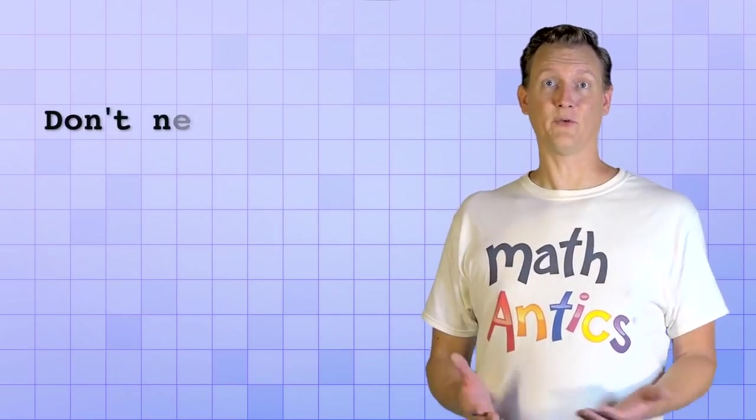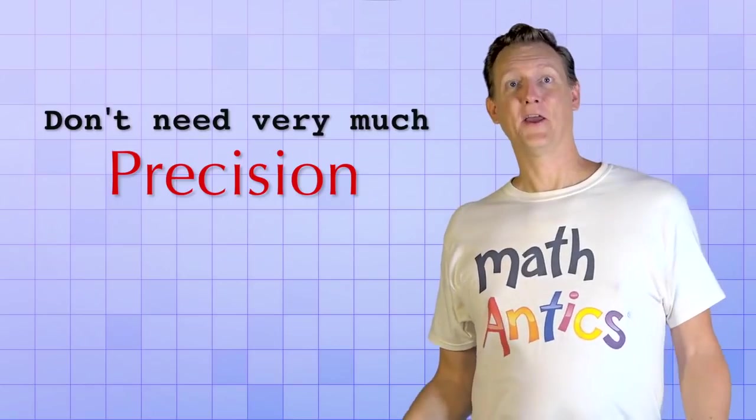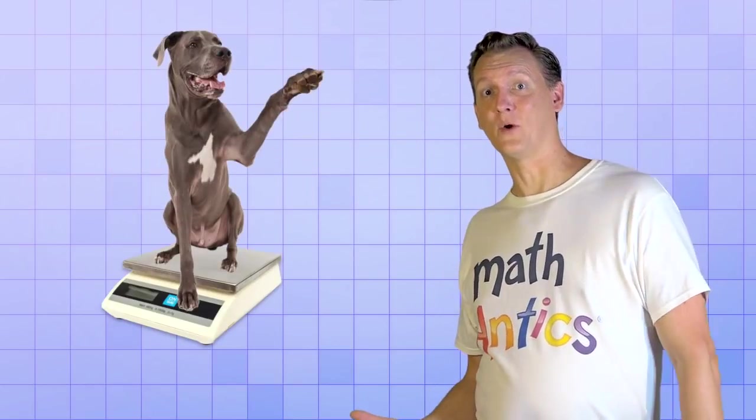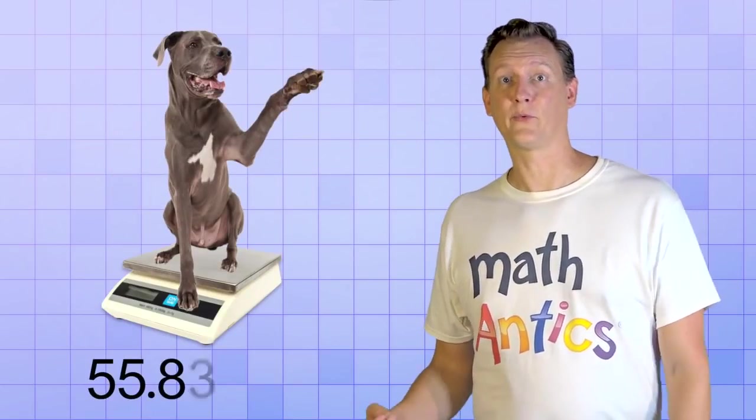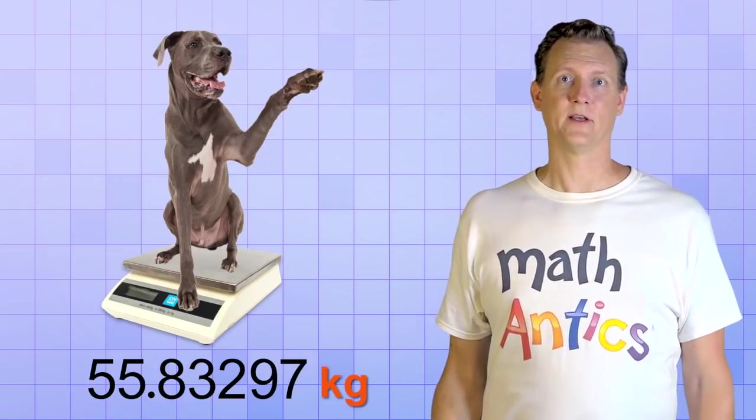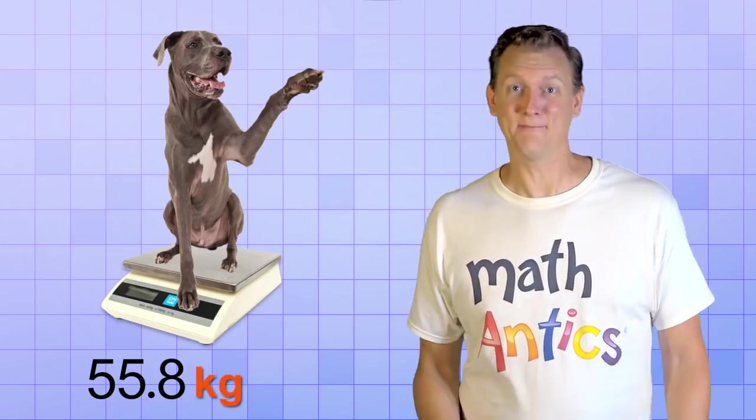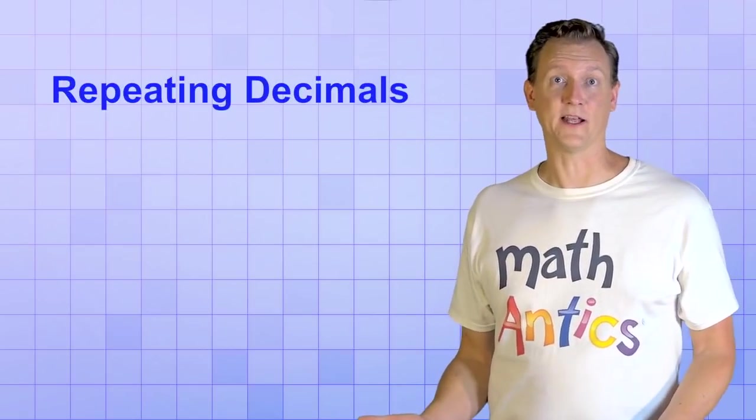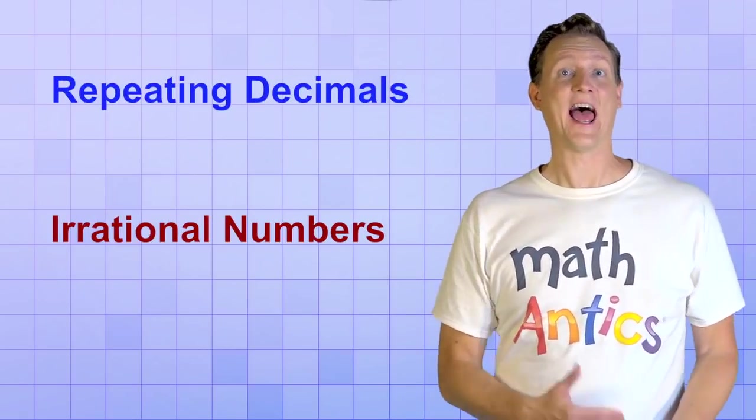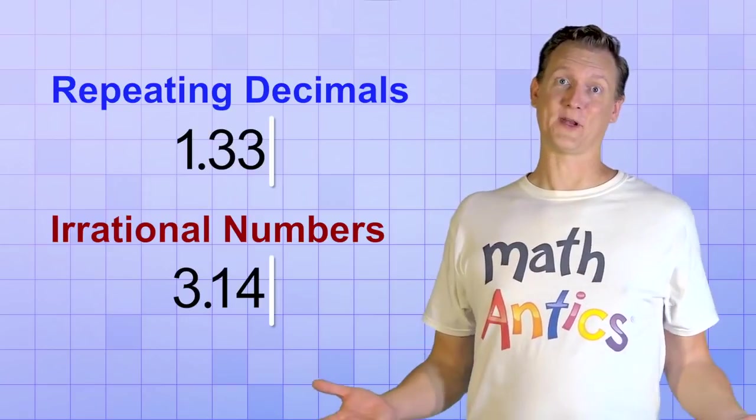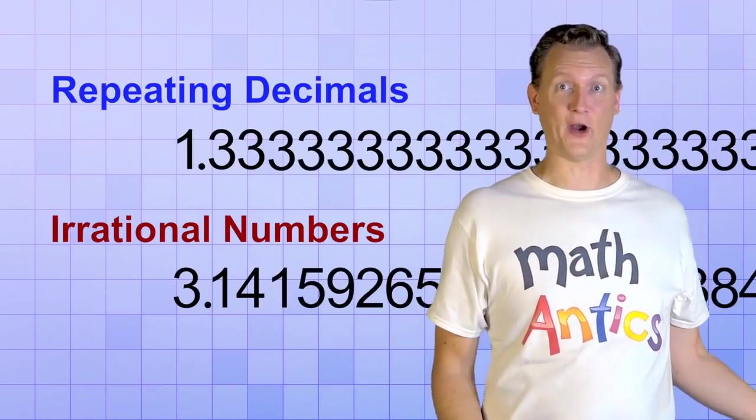Or, sometimes you just don't need very much precision. Like, you might not need to know that your dog weighs 55.83297 kilograms. 55.8 kilograms might be precise enough. And some numbers, like repeating decimals or irrational numbers, have to be rounded off because we can't just keep writing decimal digits forever!